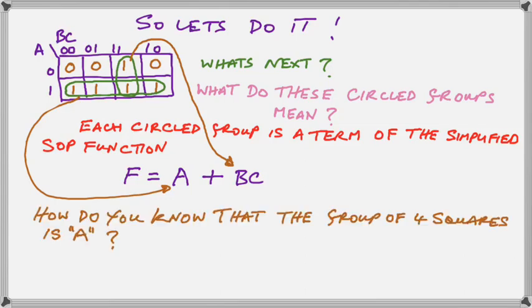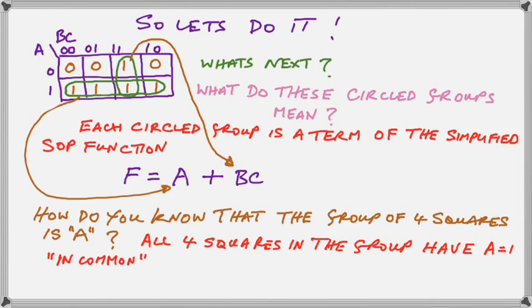How do you know that the group of four squares is A? That's a very good question. All four squares in the group have A equals one in common. That's a very important statement. That's why it's in red. So take a look at the table, the Karnaugh map, and see that all four squares in that circled green group have A equals one in common.